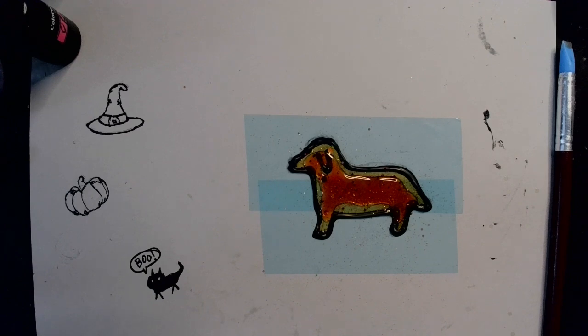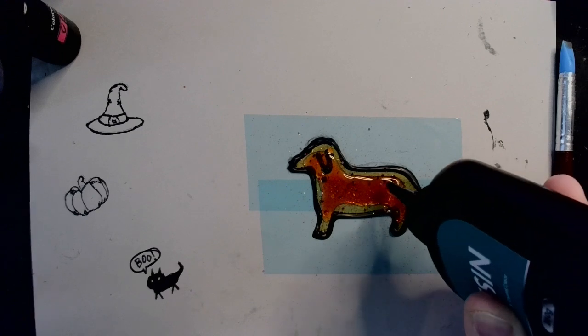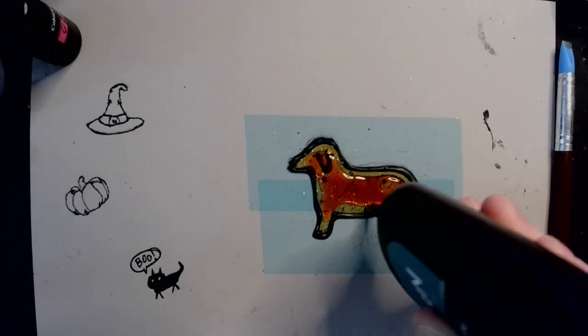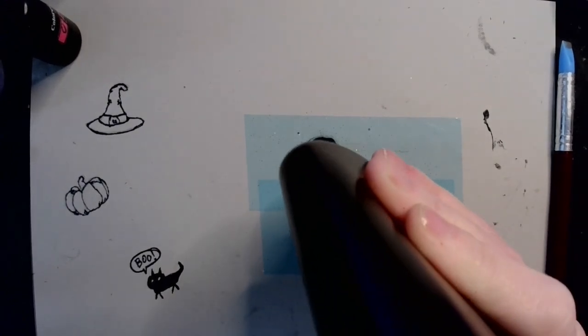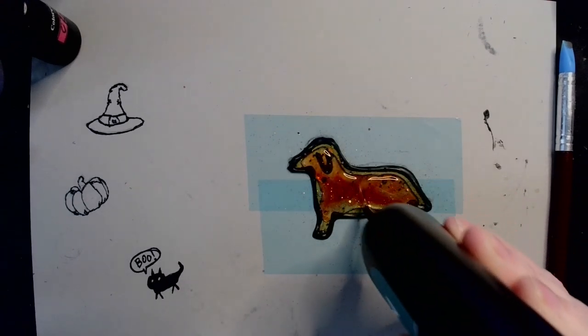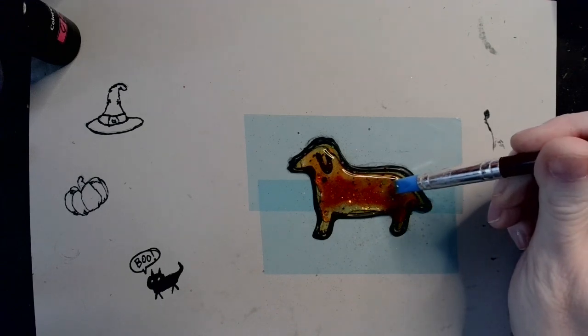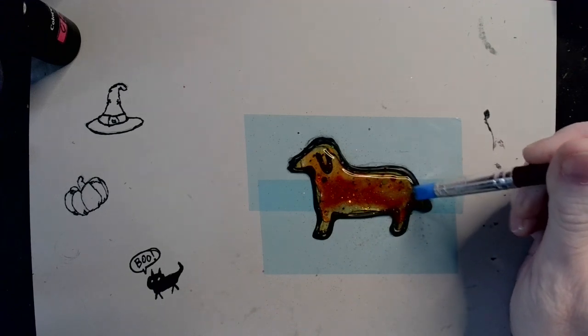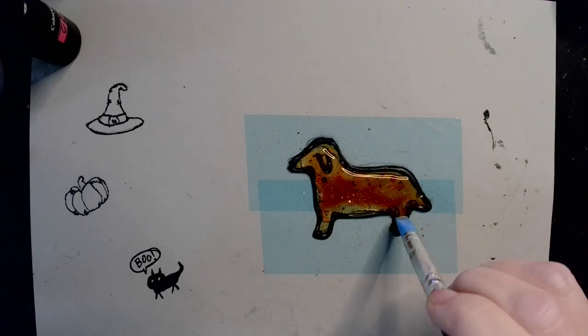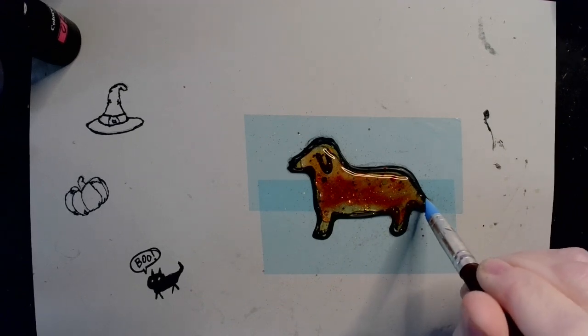And then I'm also going to add some clear. And of course, links for everything that I'm using is down in the description box with the exception of the colored UV resin, which I tend to make myself. But I do have several videos on how to make your own UV resin of the colored variety in my resin projects playlist. So please feel free to peruse that at your leisure.